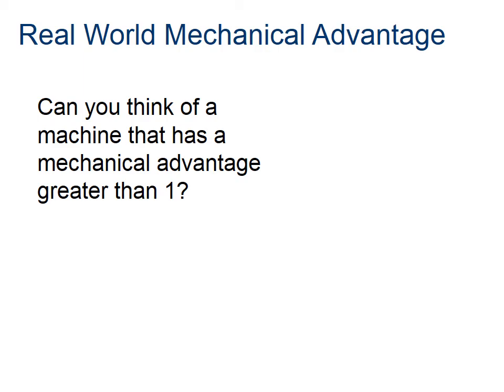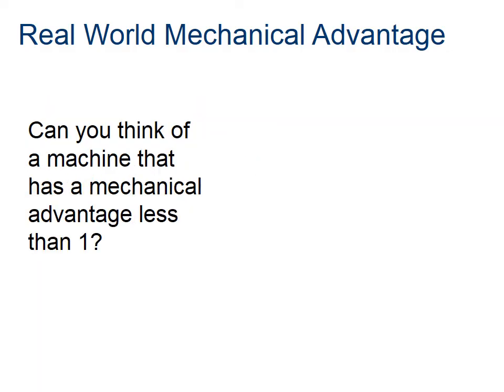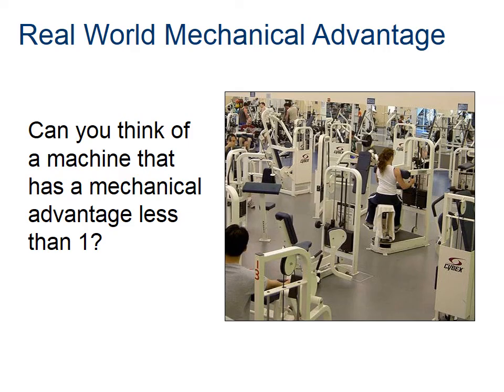In most cases you'll find that mechanical advantage is greater than one. Here you see an example of a windmill where the force from the blades turns a turbine inside. A trickier example: can you think of one where MA would be less than one? How about exercise machines? You want to make exercise machines smaller so that they move a lesser distance — if you had a mechanical advantage greater than one, those machines would have to be huge and your gym would have to be huge. This concludes our presentation on mechanical advantage.